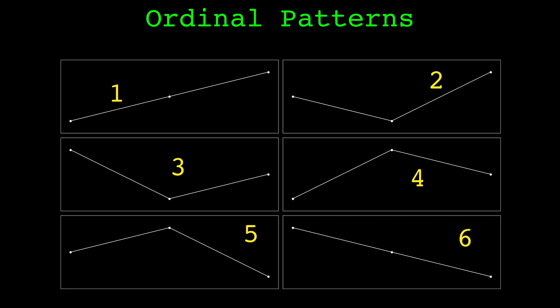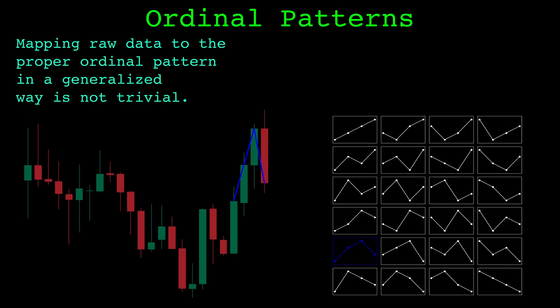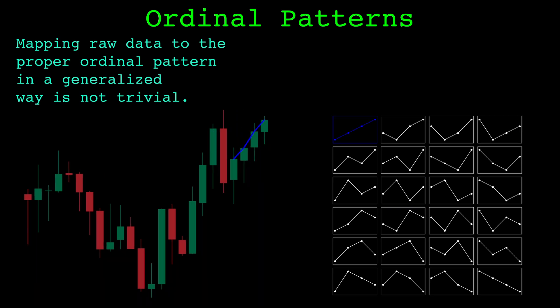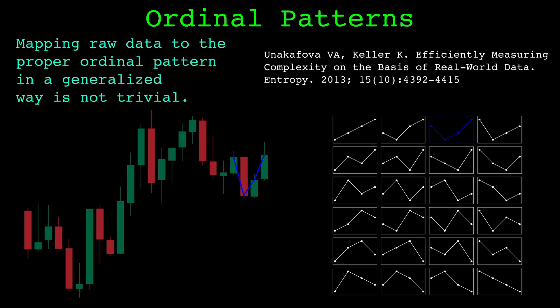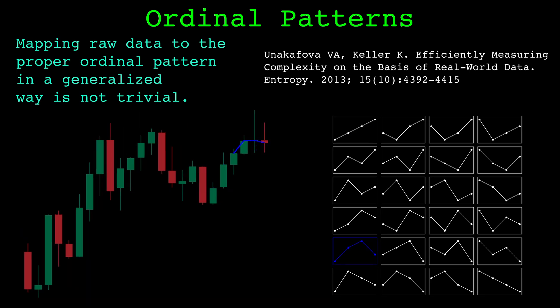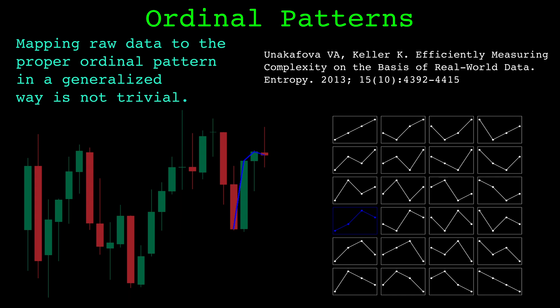Each of these ordinal patterns can be described with a number or a symbol. For an embedding dimension of three, we have six ordinal patterns and we can describe each of them with a symbol. These patterns do not consider the possibility of equal points. The reason for this is we are focusing on a trading application — equal prices from one candle to the next are rare. Adding additional ordinal patterns to accommodate for equal prices adds considerable complexity for something that happens very infrequently. The approach we will follow is described in this paper, which describes a generalized way to find which ordinal pattern describes data for any embedding dimension. The paper has all the mathematical details as well as information for dealing with equal points if you're interested.